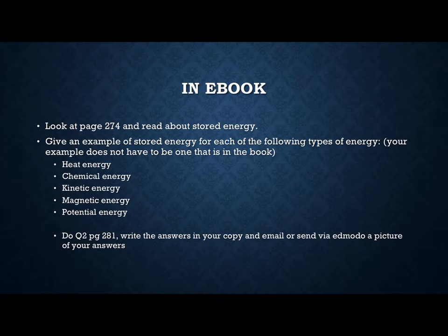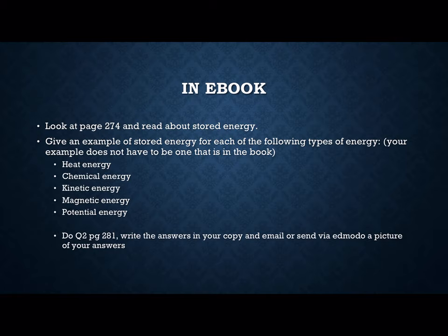Go to your e-book to page 274 and read all about stored energy. Then give an example of stored energy for each of the following types: heat, chemical, kinetic, magnetic, and potential energy. You do not have to use the example given in your book — it would be a great idea to research your own. Also do question 2 on page 281, write the answers into your copy, and send them via Edmodo to me.